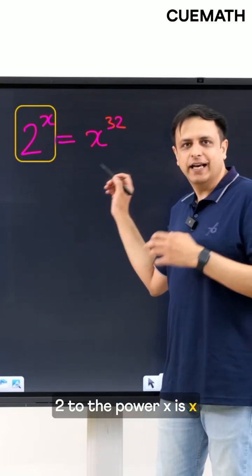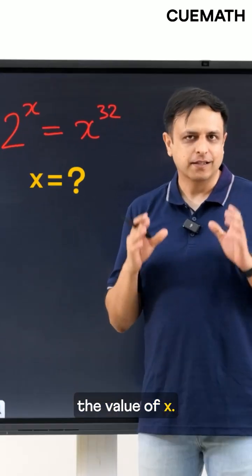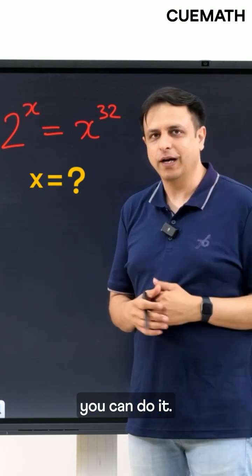2 to the power x is x to the power 32 and you have to find the value of x. 99% of people are unable to solve this equation so pause the video and see if you can do it.